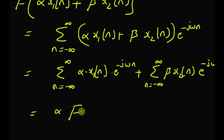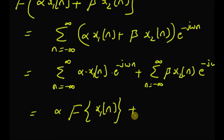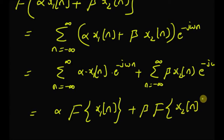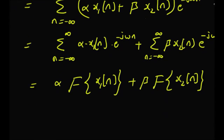So we can write it as the DTFT of x1 of n. Similarly, the second sum becomes beta times DTFT of x2 of n. This proves the linearity property, that is, the DTFT of a linear combination is the same as the linear combination of the DTFTs of the original individual signals.